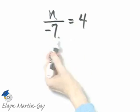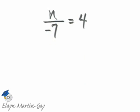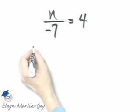This is n divided by negative 7, so to get n by itself on one side of the equation, we will multiply both sides by negative 7.